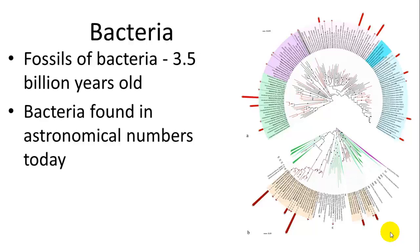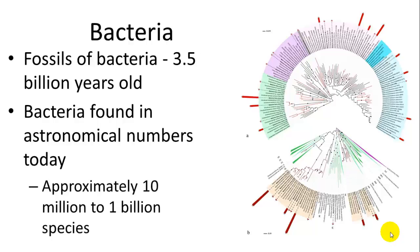Today bacteria are found in very astronomical numbers and have dominated the Earth ever since they first evolved. There are approximately 10 million to 1 billion species. It's hard to determine how many species there are because they are everywhere and evolve very quickly, similar to viruses.